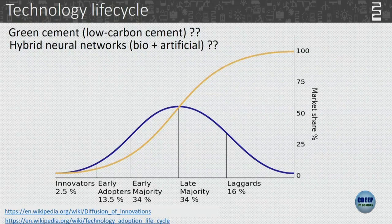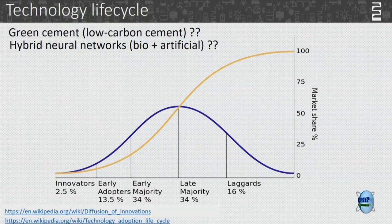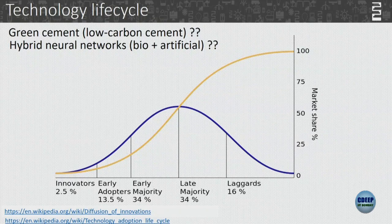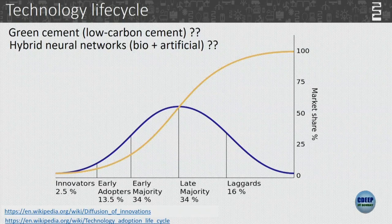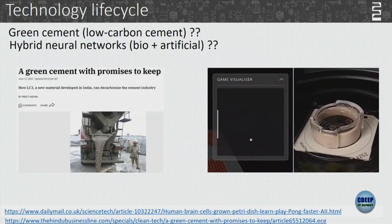Hybrid neural networks — science fiction types. Where do you think that lies as a technology? Part of it is organic brain, part of it is artificial. Any idea? Someone guesses innovators. Any data point? Just a guess. It's a good guess — you're thinking it's not just fiction, meaning somebody is actually doing it.